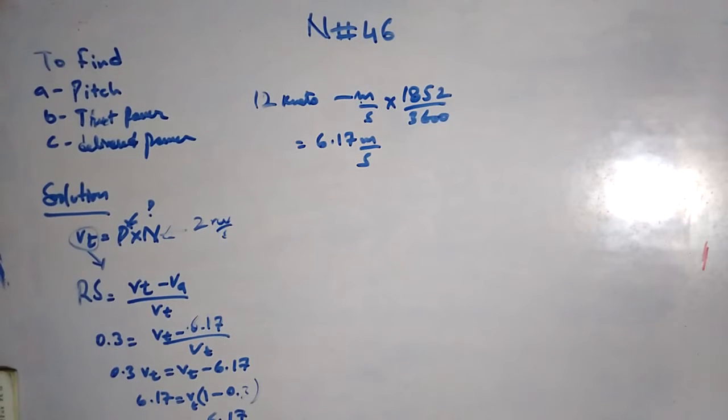6.17 divided by 0.7 gives me 8.814 meters per second.